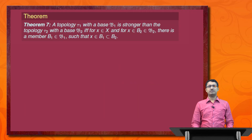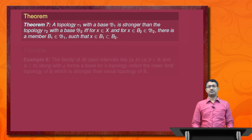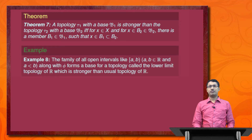Theorem 7 states: a topology tau_1 with a base script-B_1 is stronger than the topology tau_2 with a base script-B_2 if and only if for any x in X and any B_2 in script-B_2 containing x, there exists a member B_1 in script-B_1 such that x belongs to B_1 and B_1 is a subset of B_2. Consider Example 8: the family of half-open intervals [a, b) where a, b belong to R and a < b, along with phi, forms a base for a topology called the lower limit topology of R, and it is stronger than the usual topology of R.